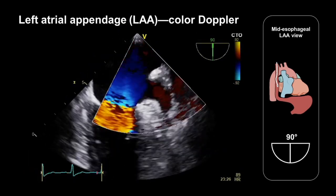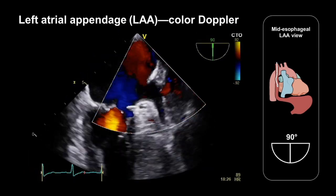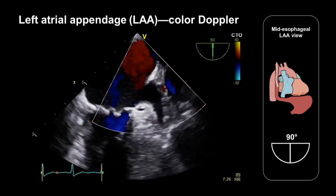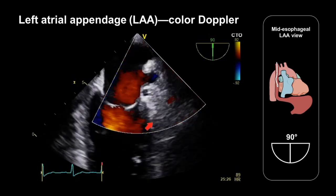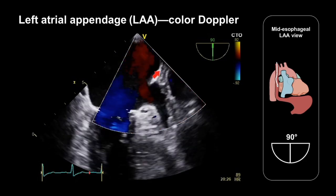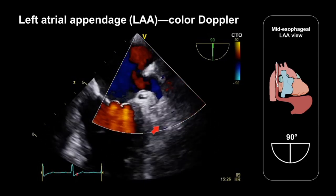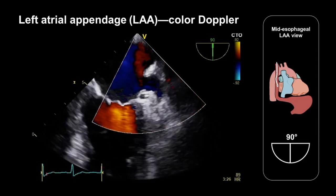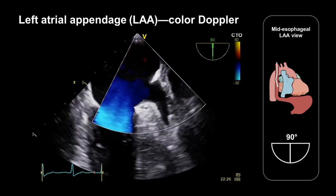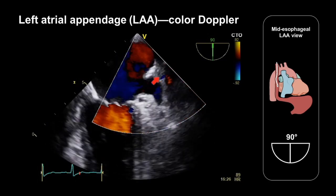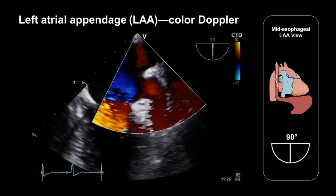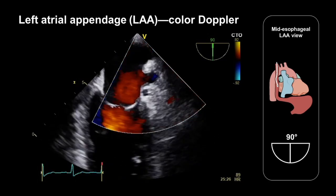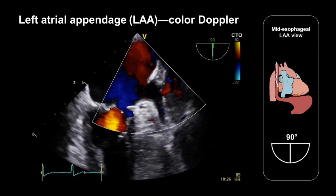Once we've assessed the anatomy of the left atrial appendage, we should apply colour Doppler, which can help us to assess the full extent of the appendage. The presence of colour within the appendage makes it easier to see exactly how far it extends.